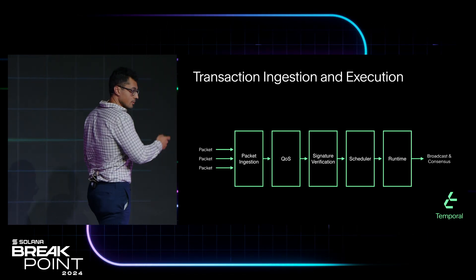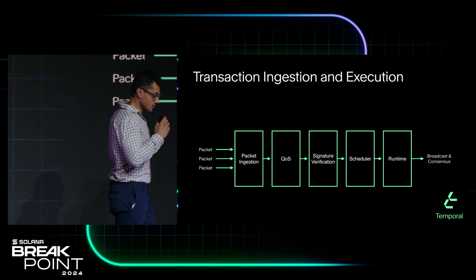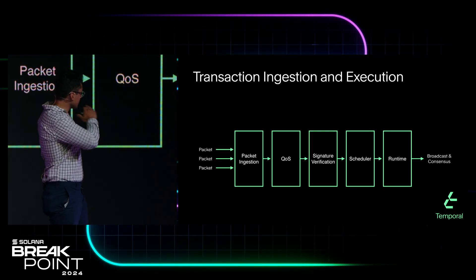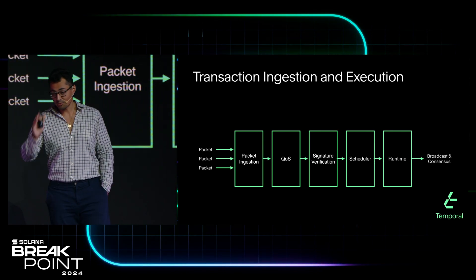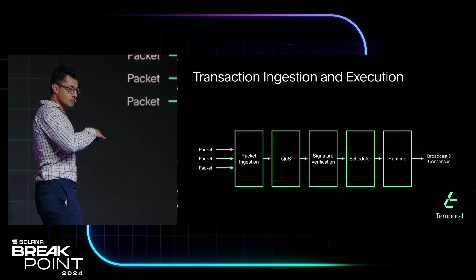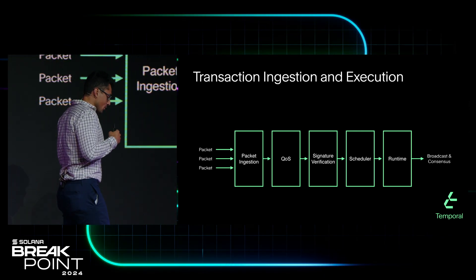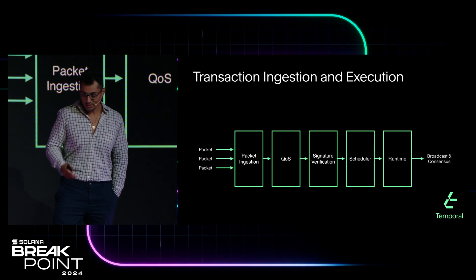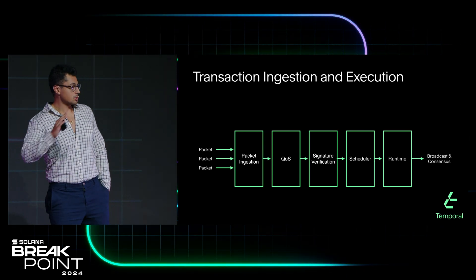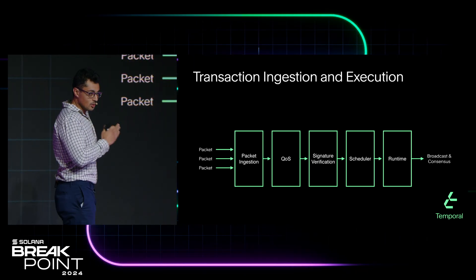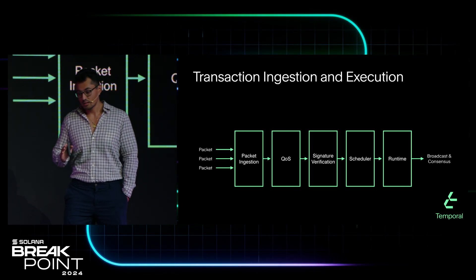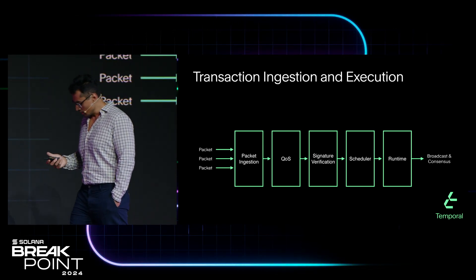And then we get to the point where the VM invokes the entry point of an on-chain Solana program. That is a very interesting transition in this critical path, because it's the first time that code not written or selected by a core dev begins to execute. The core devs can deliver the most optimized client by whatever metrics you wish to put forth, but if the on-chain programs are inefficient, we will not realize the vision of Solana as a blockchain for global scale.